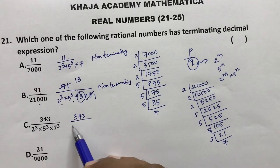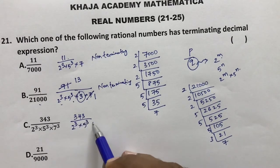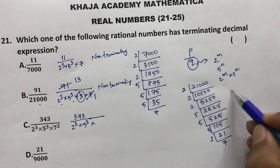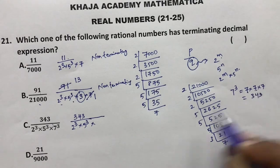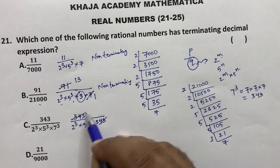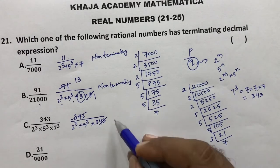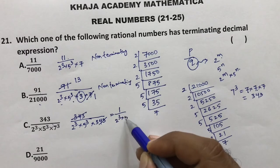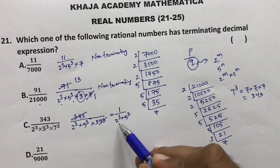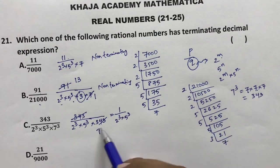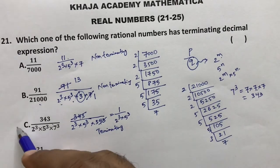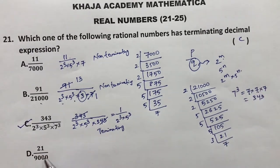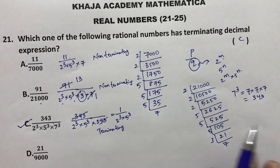Now checking 343 by 2³ × 5³ × 7³. Since 7³ = 7 × 7 × 7 = 343, the 343 in the numerator and 7³ in the denominator cancel out. You are left with 1 by 2³ × 5³. The denominator has only 2 and 5, so it is terminating. The correct option is C.